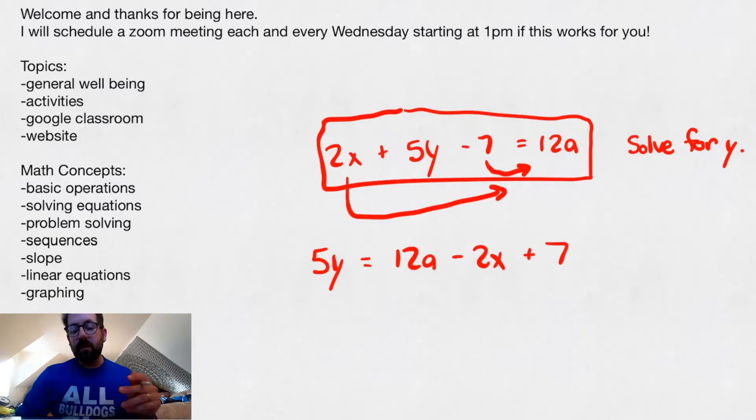That is the opposite of subtracting the 7. So again, we do the opposite to the other side, so we subtract the 2x instead of adding it, and we're going to add the 7 instead of subtracting it. And then the last step is after you add and subtract everything over, you want to divide by the last thing that has a y on it.